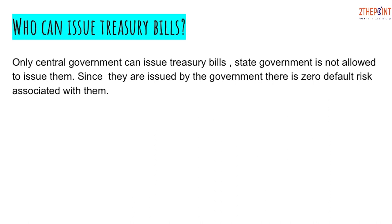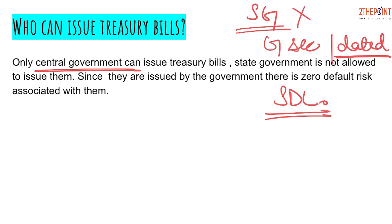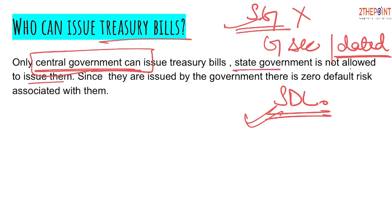Who can issue Treasury Bills? Only the Central Government can raise money through Treasury Bills. State Governments are not allowed to issue Treasury Bills. If a State Government needs to raise funds, it must issue Government Securities — also called Dated Securities — or State Development Loans. Since they are issued by the government, there is zero default risk, and that is why they are also called gilt-edged securities.